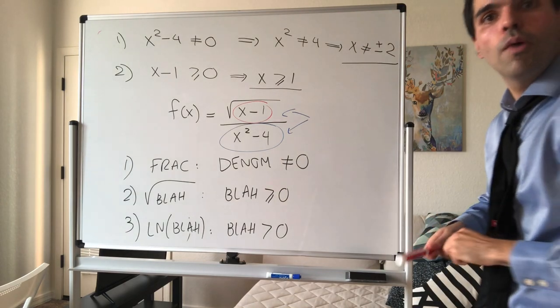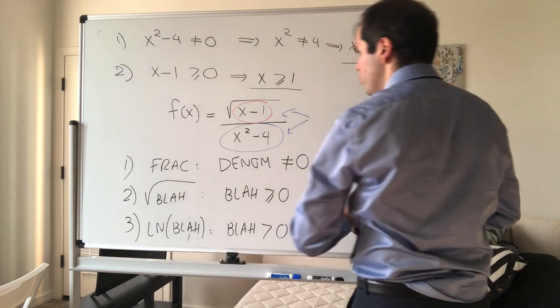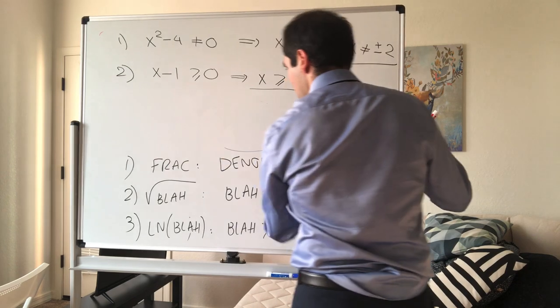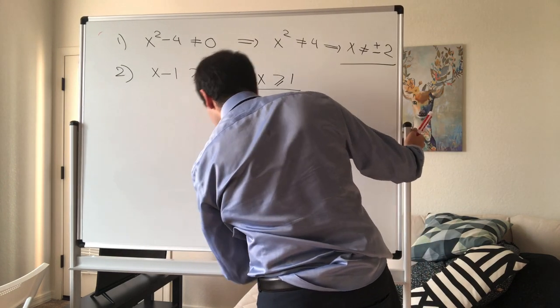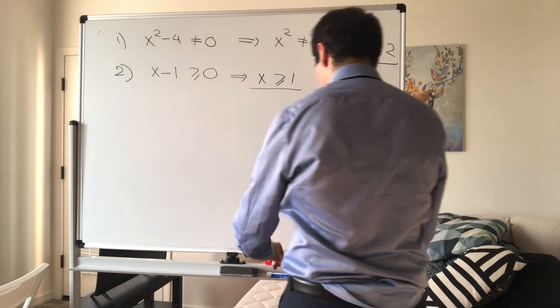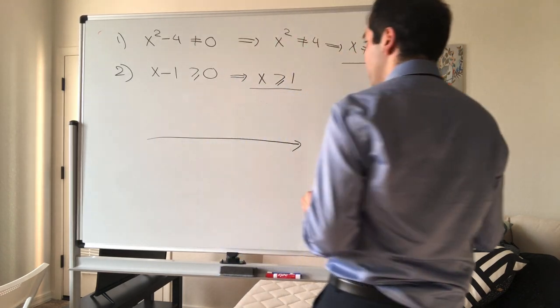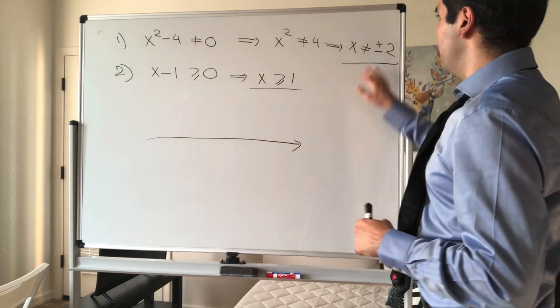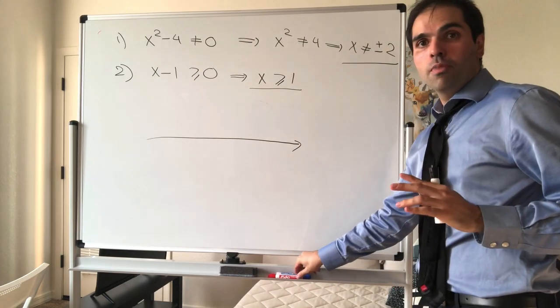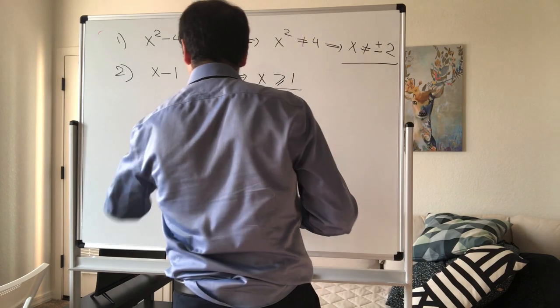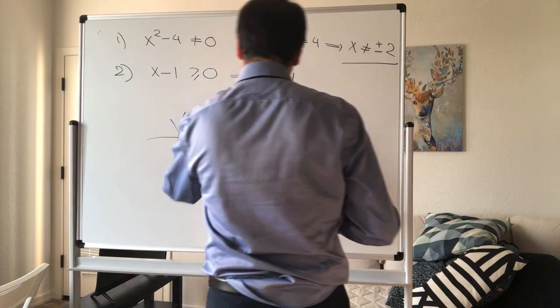And now let's just summarize what we found. So we have two things. So let's say this is the number line, this is the real number line. First of all, what I said is we don't want plus or minus 2.